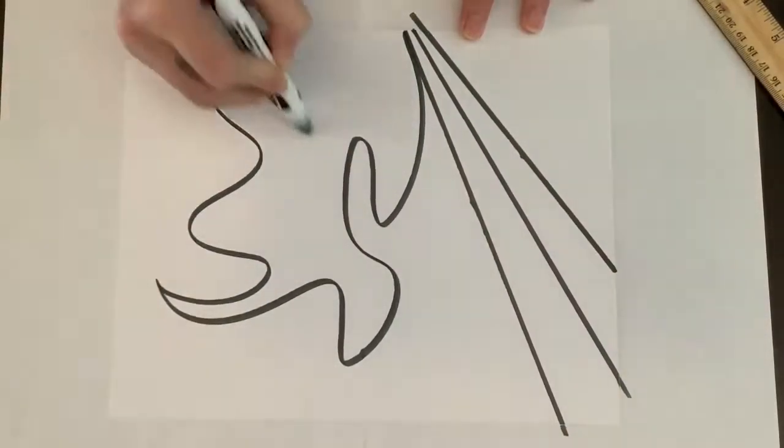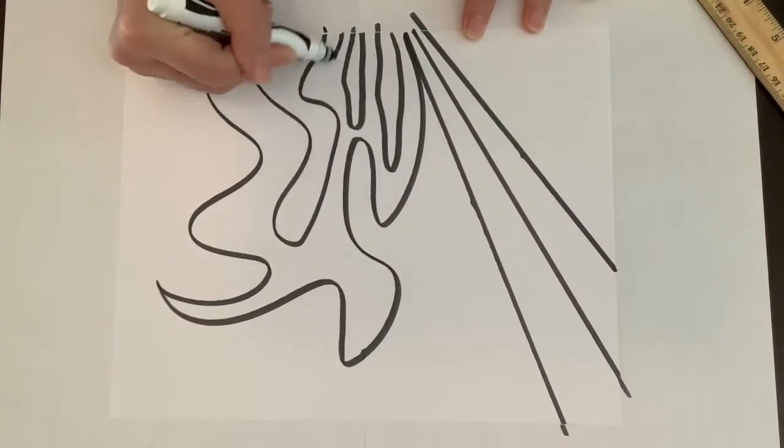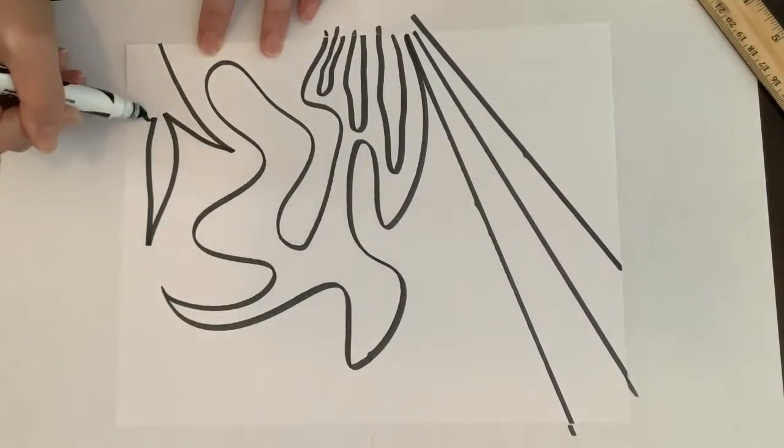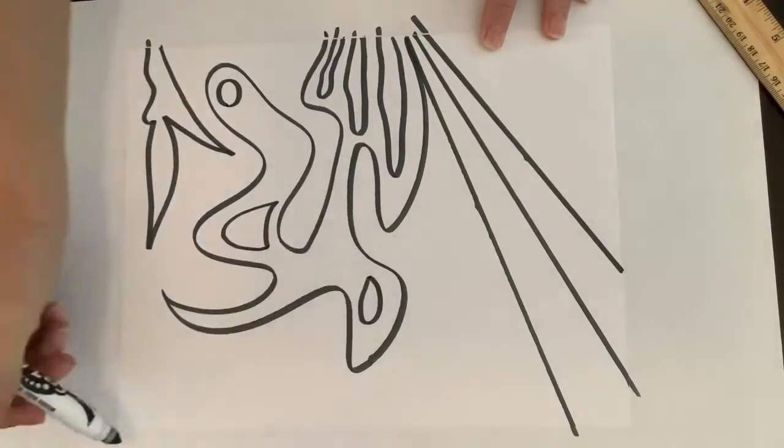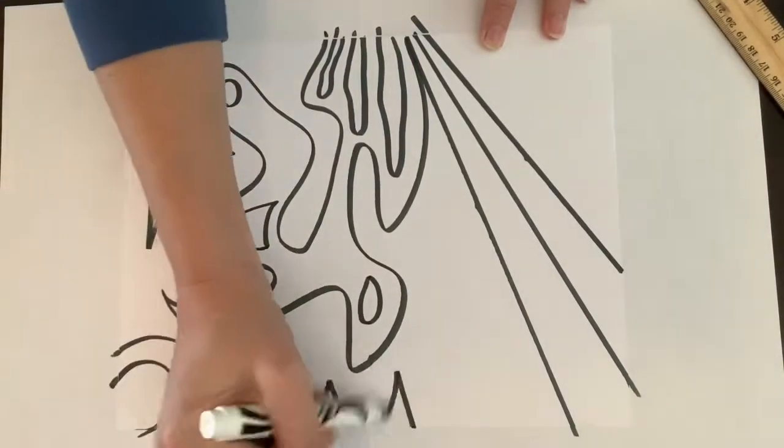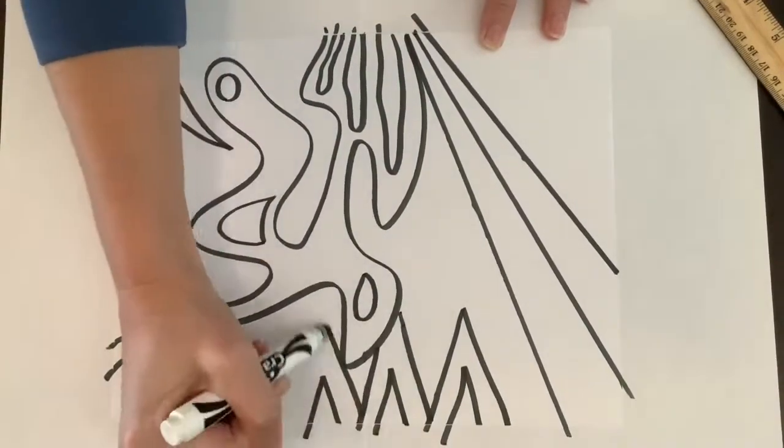If you want to make straight lines, use a ruler. You can also use organic shapes. You can use anything to trace circles, triangles.